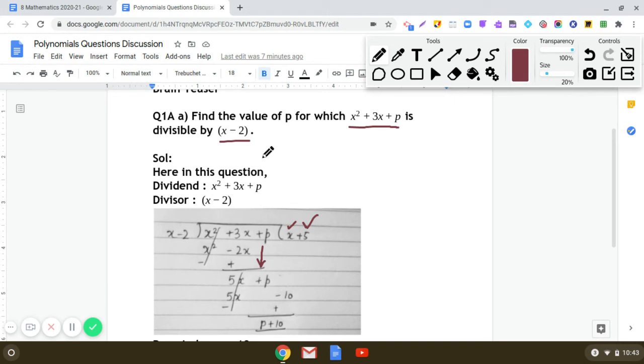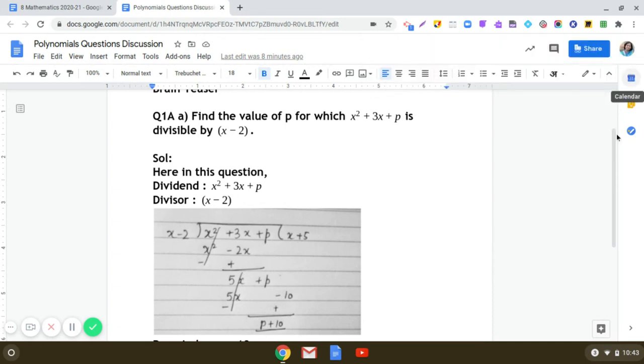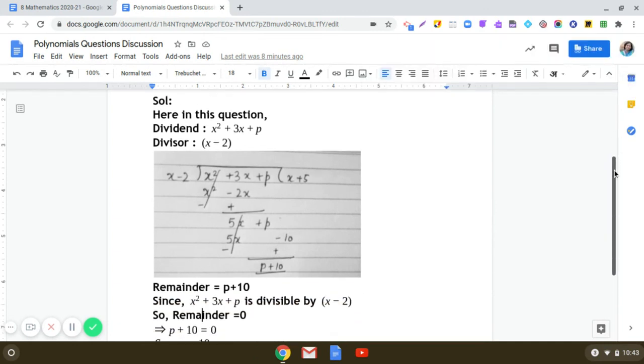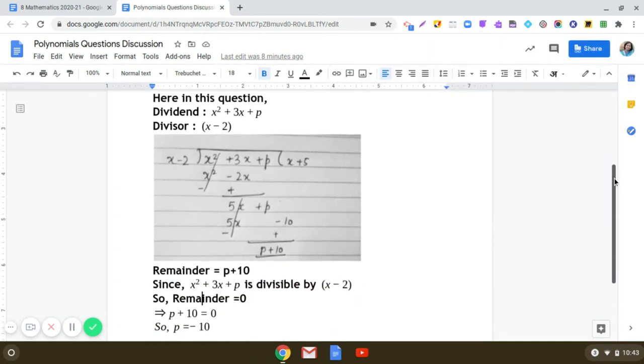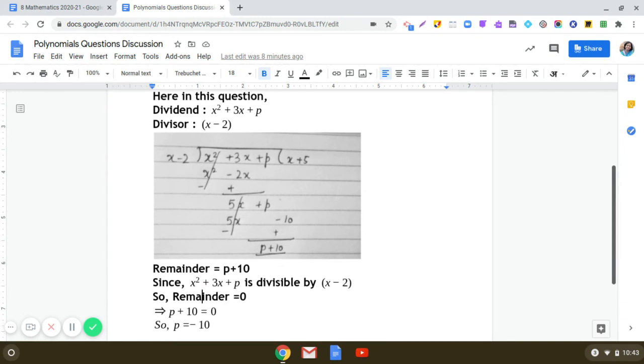Now look carefully. It is given that we have to find the value of p for which x² + 3x + p is divisible by x - 2. This indicates that the remainder should be 0. So what is the remainder here? Remainder is p + 10. So this p + 10 should be 0, meaning the value of p will be -10.